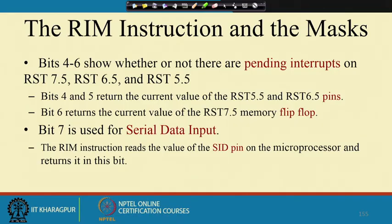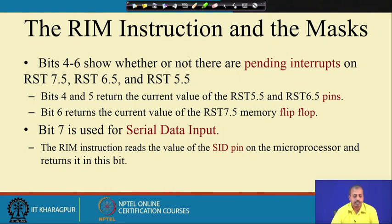For the RIM instruction, bits 4 to 6 show whether or not there are pending interrupts on RST 7.5, 6.5, and 5.5 lines. Bits 4 and 5 return the current value of RST 5.5 and 6.5 pins, while bit 6 returns the current value of the RST 7.5 memory flip-flop.